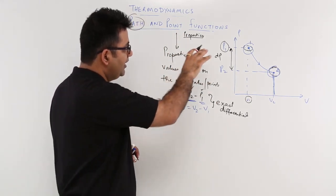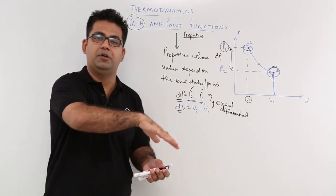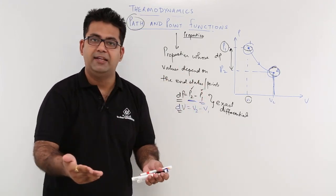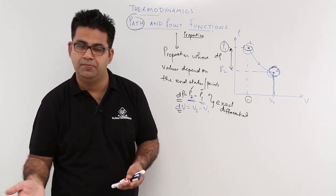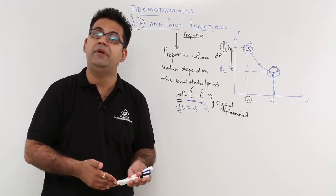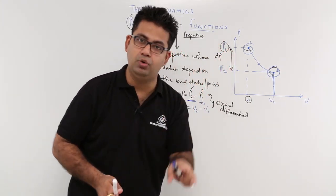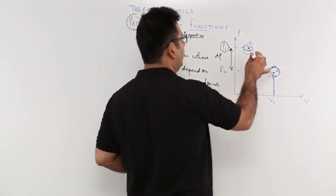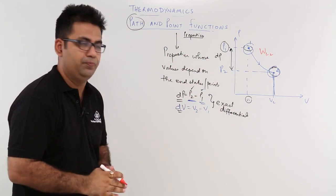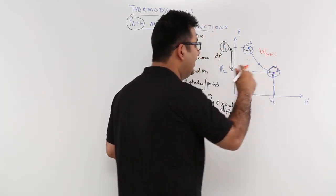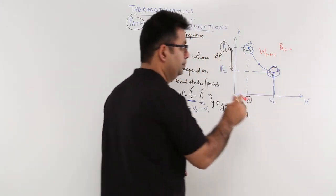Let us take the same process, process 1 to 2. In going from state 1 to state 2, the system would have undergone some energy interaction with the surroundings — there might be a work interaction or a heat interaction. So let us say the amount of work produced is W12, or the amount of heat interaction in going from 1 to 2 is Q12.